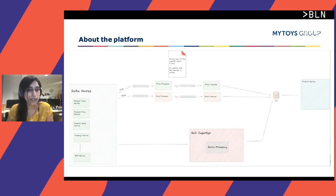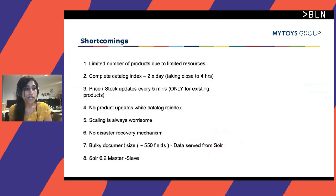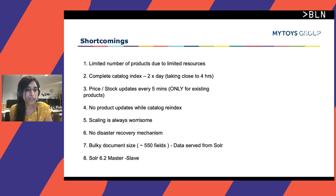The subsidiary process was also supported for price and stock — essential for e-commerce to maintain competitive prices and stock updates. However, stock updates were not processed when this batch process was running, which was one of the biggest disadvantages. We could only support a limited number of products due to limited resources. The complete catalog re-index, happening twice a day, took close to four hours each time, and there were no product updates while it was running. Scaling looked worrisome, there was no disaster recovery mechanism, and we had bulky document sizes because we were storing everything in Solr.